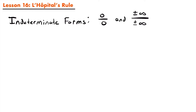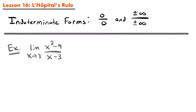Specifically, the indeterminate forms of 0 divided by 0 and plus or minus infinity divided by plus or minus infinity. That could be infinity divided by infinity, or negative infinity divided by infinity, and so on. Any form of an infinite value divided by another infinite value is an indeterminate form.